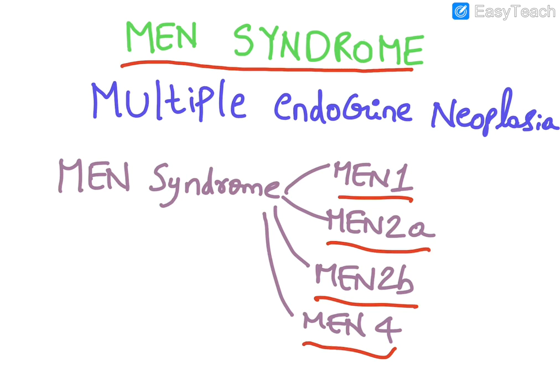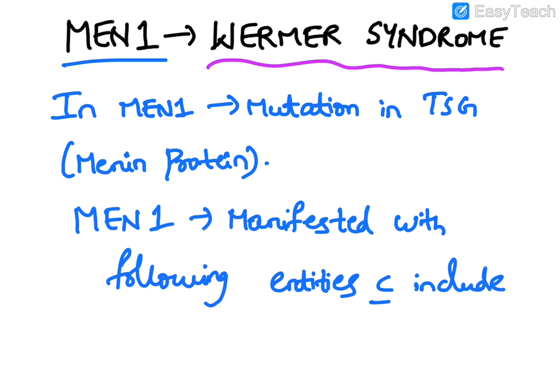Hello everyone. Today's topic of discussion is MEN syndrome — Multiple Endocrine Neoplasia. MEN syndrome is classified as MEN1, MEN2a, MEN2b (also known as MEN3), and MEN4.